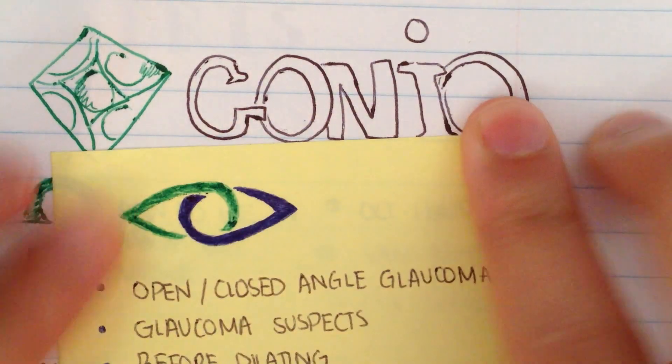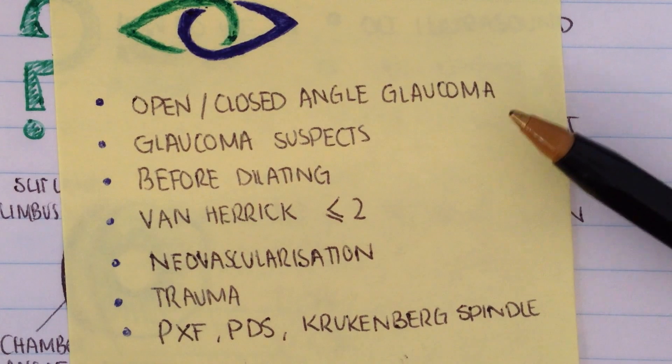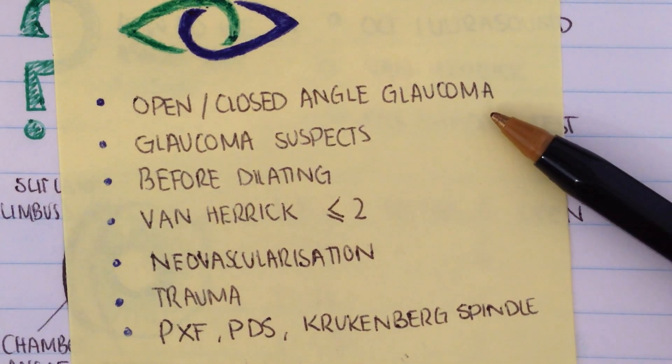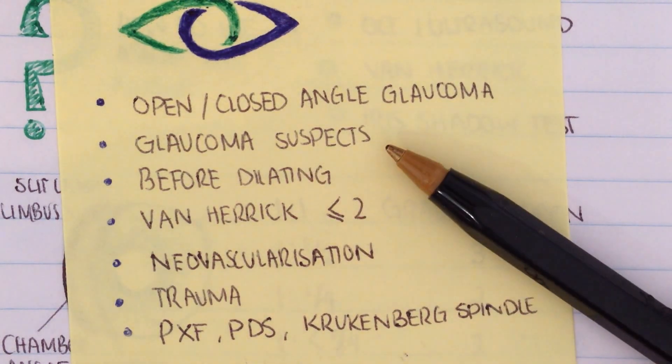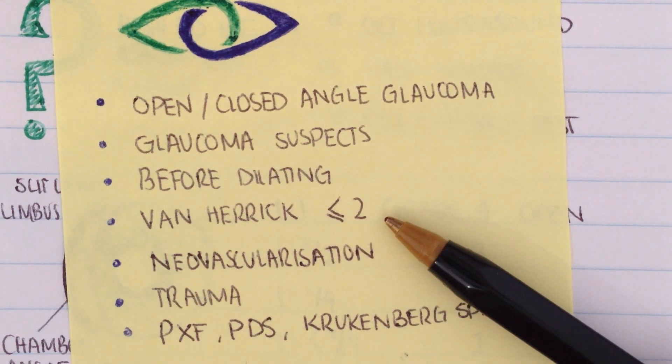According to the OOA, there are a number of reasons why we perform gonioscopy. First being whether the patient has open or closed angle glaucoma, whether they are suspects, before we dilate a patient if we measure a Van Herrick of less than or equal to two.